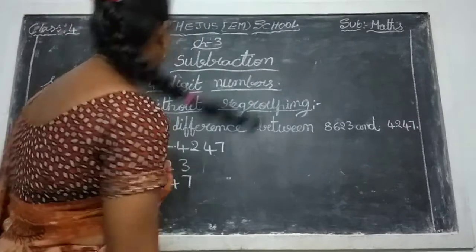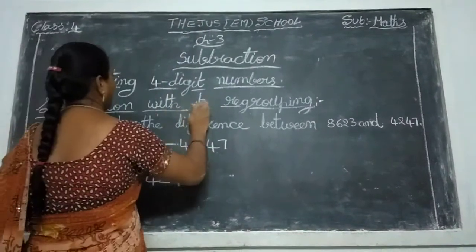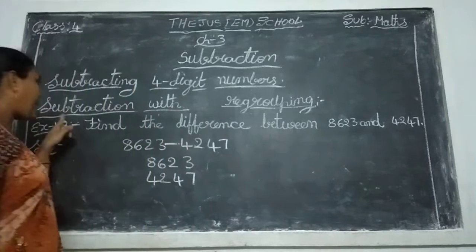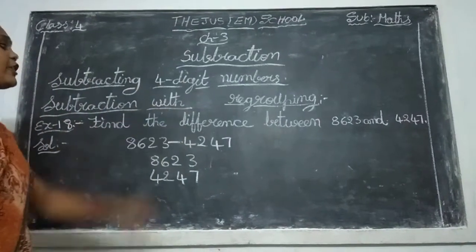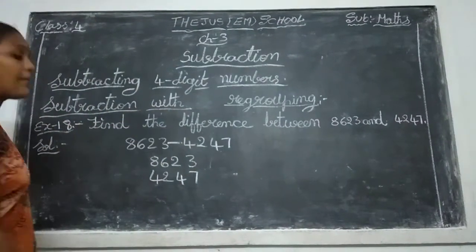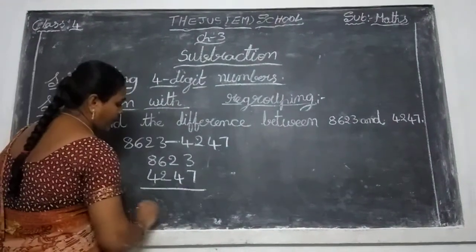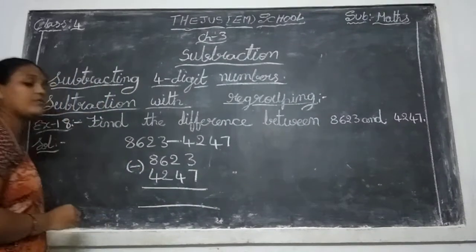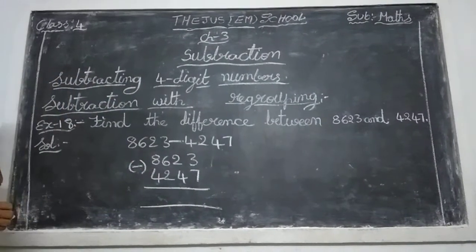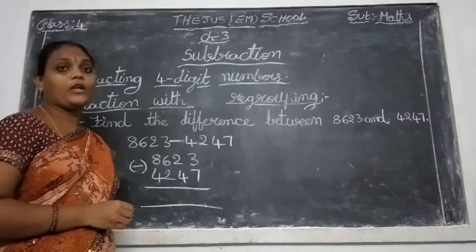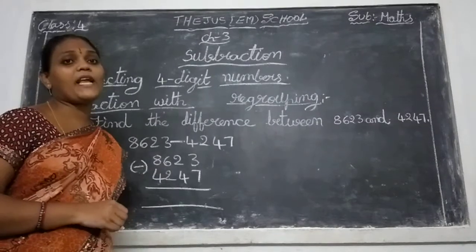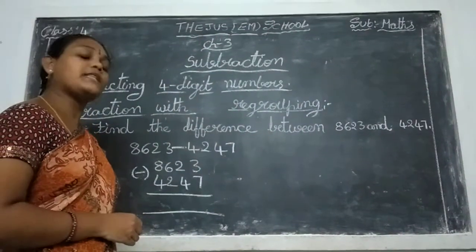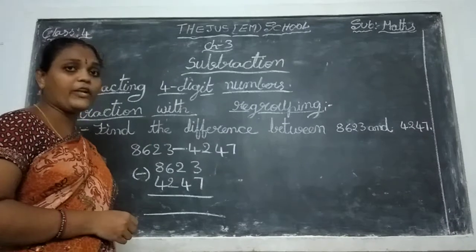And this is subtraction with regrouping. Subtraction with regrouping — regrouping means you did subtractions in third class with borrowing sums. That is called subtraction with regrouping.